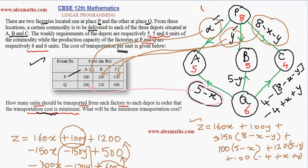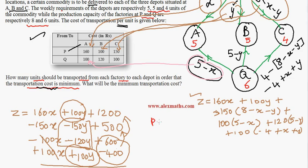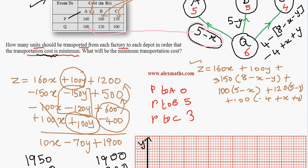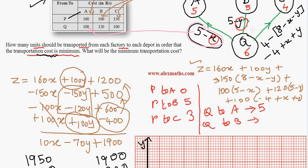Based on x = 0 and y = 5, the transportation plan is: P to A = 0 units, P to B = 5 units, P to C = 3 units (since 8 − 0 − 5 = 3). From Q: Q to A = 5 units (since 5 − 0 = 5), Q to B = 0 units (since 5 − 5 = 0), Q to C = 1 unit (since −4 + 0 + 5 = 1). If you like this video, please subscribe to our channel and share it with your friends.